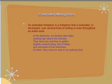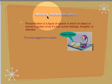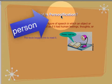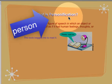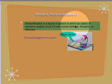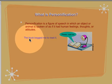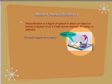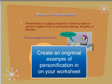Next, we have personification. This is one of my favorites because you can see a hint right in the term: personification — 'person' is in there. Personification is the figure of speech in which an object or an animal is given human-like characteristics or attitudes. Here is my favorite example: the book begged me to read it. Now, I want you to come up with an original example of personification and write it in your notes.